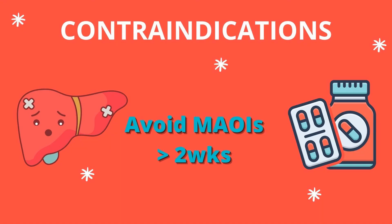What are some of the contraindications? Avoid Tegretol in any patient that has hepatic impairment. Remember to avoid MAOIs and wait at least two weeks. Use caution with Tylenol, clomipramine, benzodiazepines, Haldol, anticonvulsants, and anticoagulants. Also be cautious with oral contraceptives while on this medication.